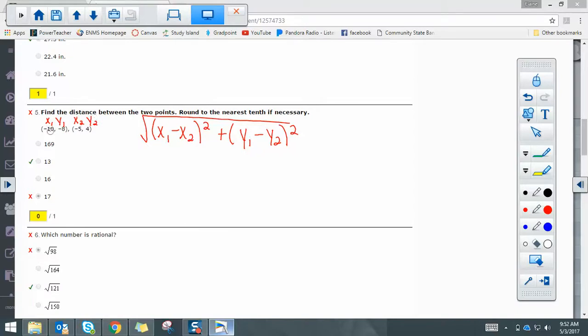So if we plug in the first, we get negative 10 minus negative 5. And be careful with your subtracting negatives. We're going to change that to adding the opposite. Plus, y1 is negative 8 minus 4. We're also going to square that. And the whole thing is still being square rooted.